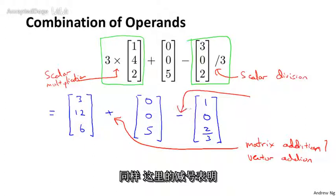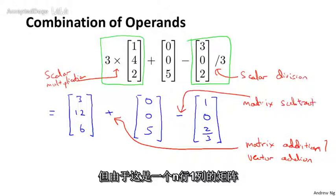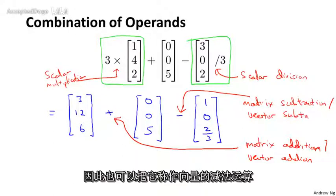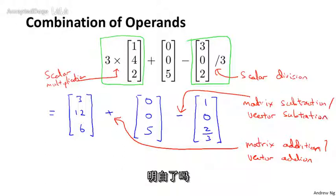And this minus sign here, this is again matrix subtraction. But because this is a 3 by 1 matrix, this is actually a vector. So this is also vector subtraction. And finally, to wrap this up.